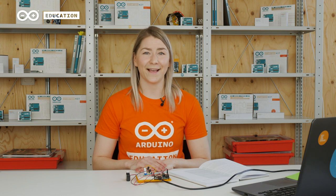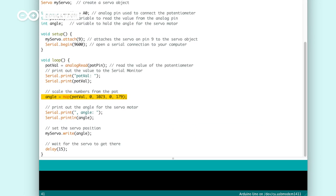The potentiometer can send values between 0 and 1023, but our servo can only take values between 0 and 179. For that reason, we will use the map function to scale the numbers. The scaled number we get from the map function gets stored to the variable called angle.